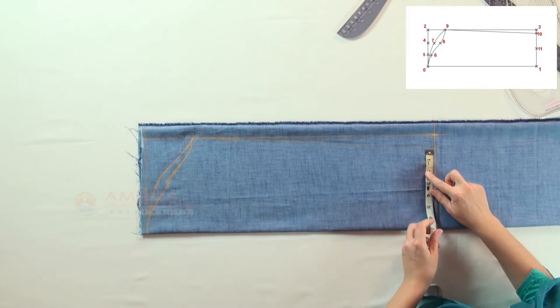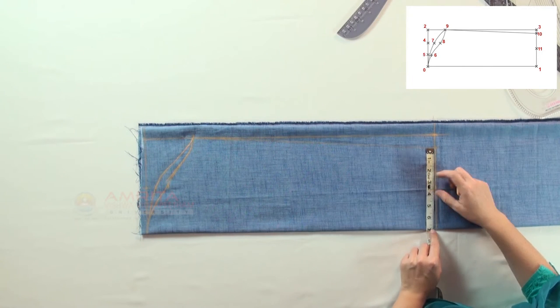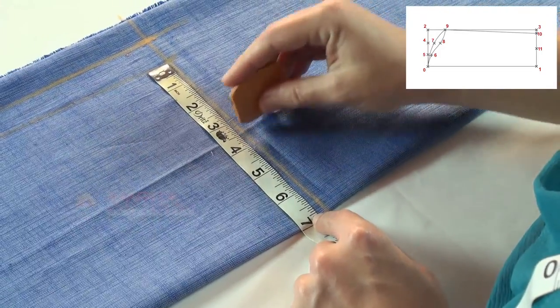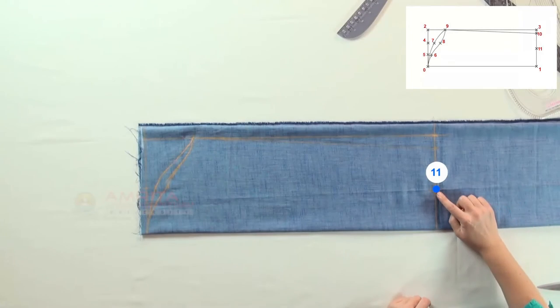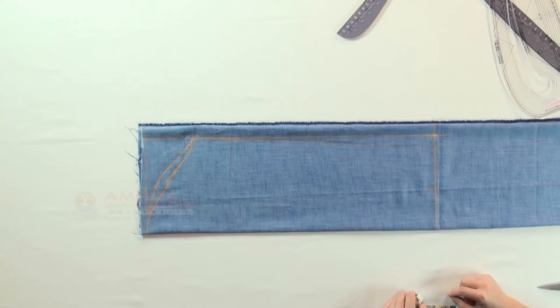Mark the midpoint of one ten. This is point eleven. This we have finished marking the pattern for the shirt sleeve on fabric.